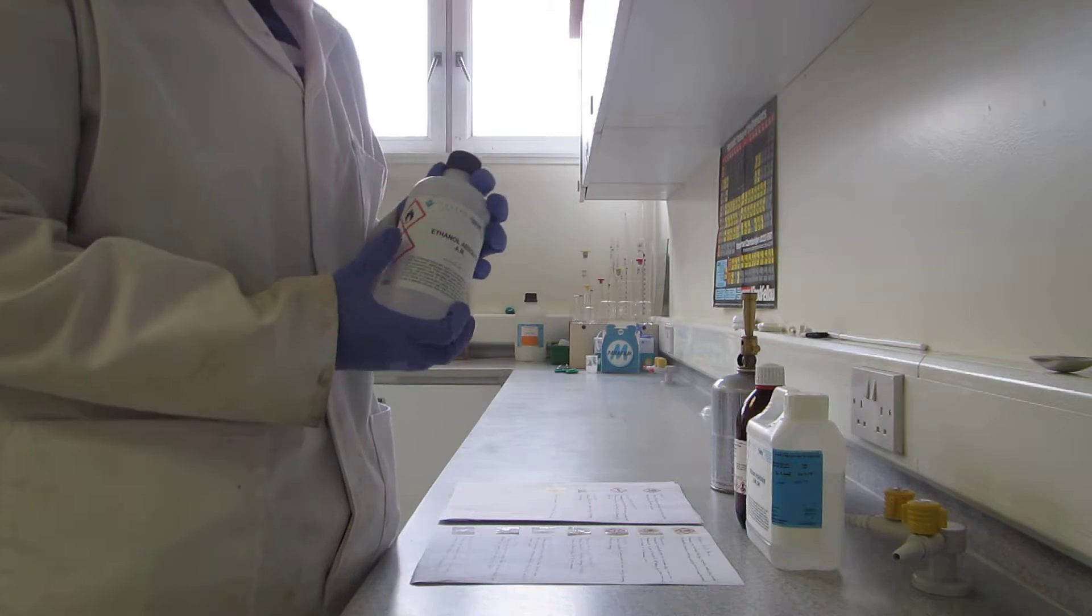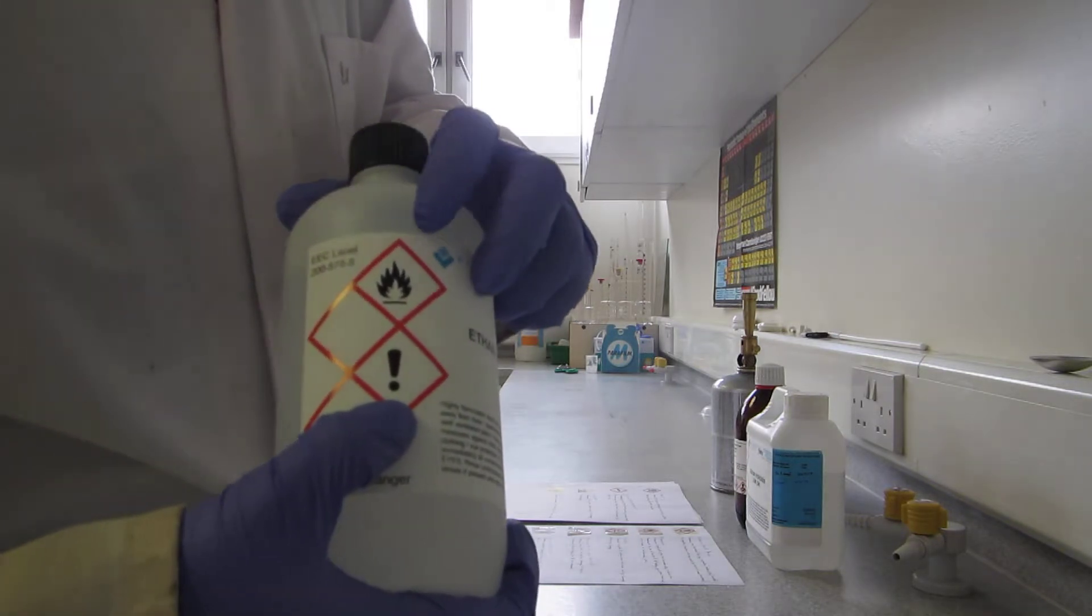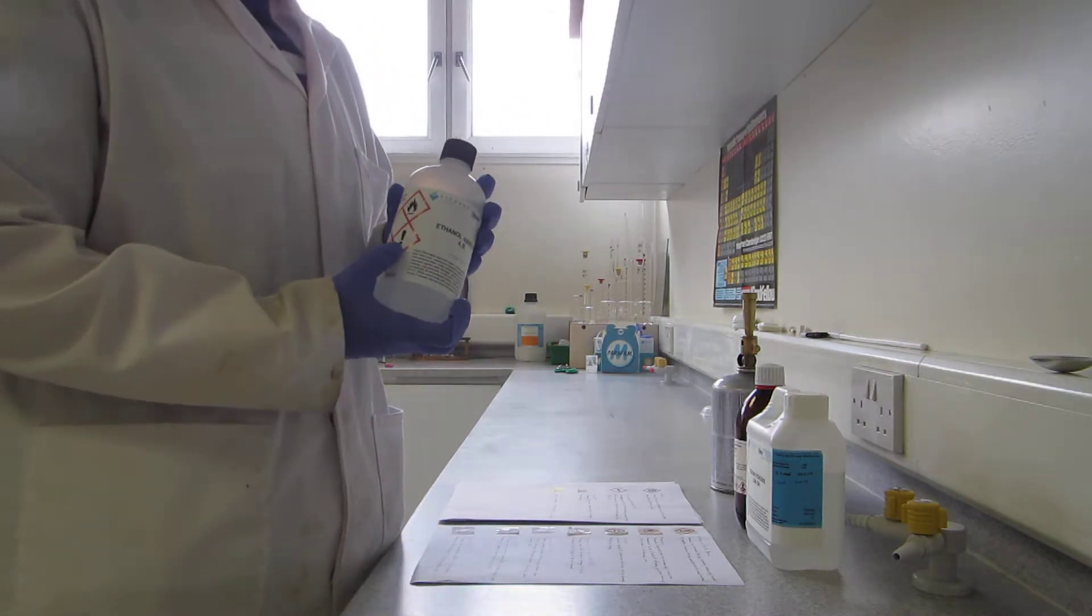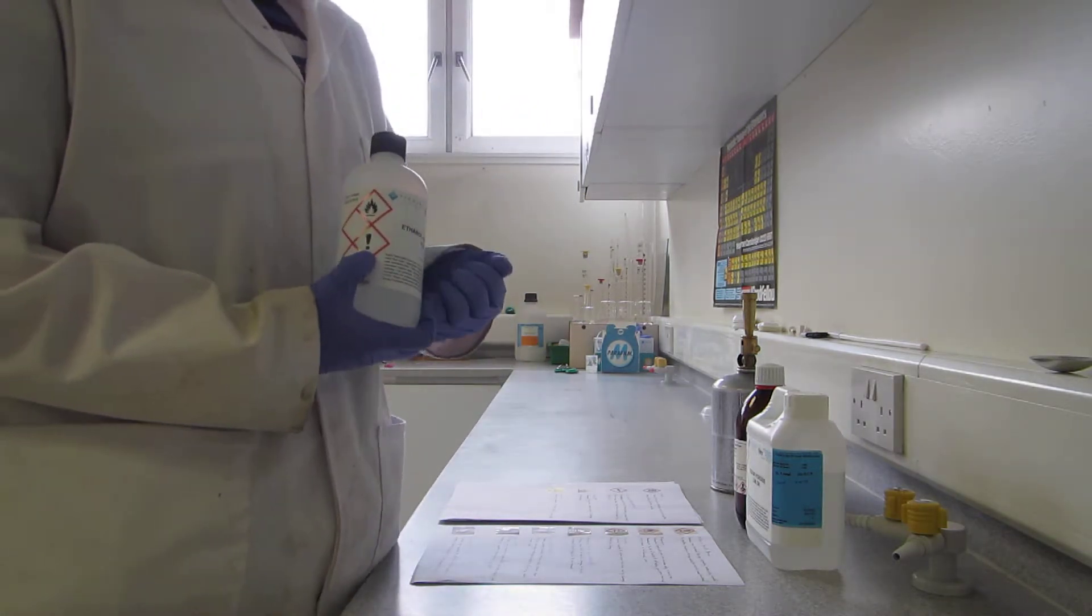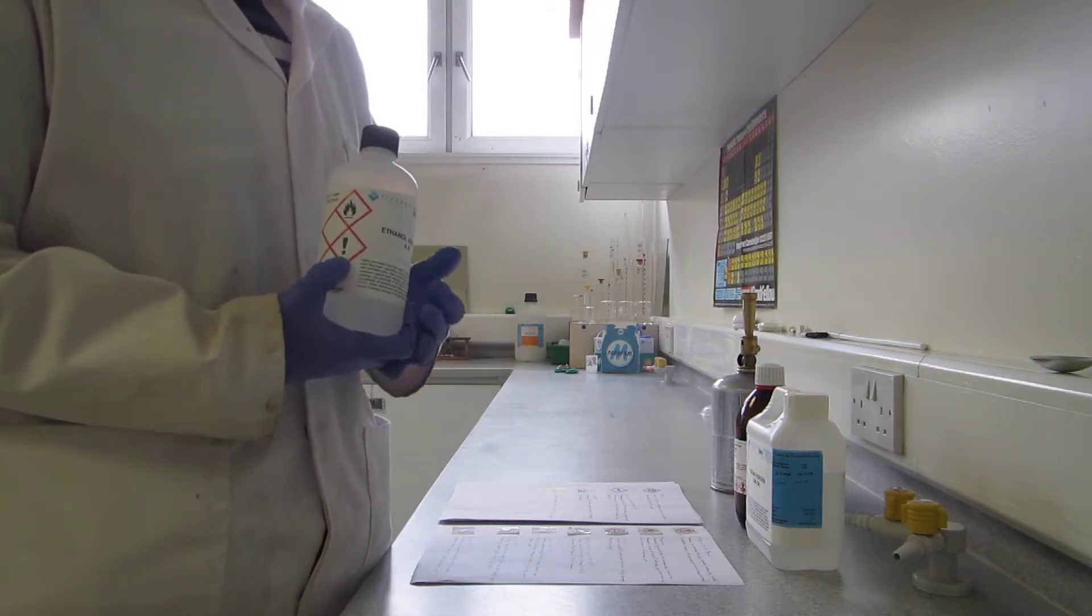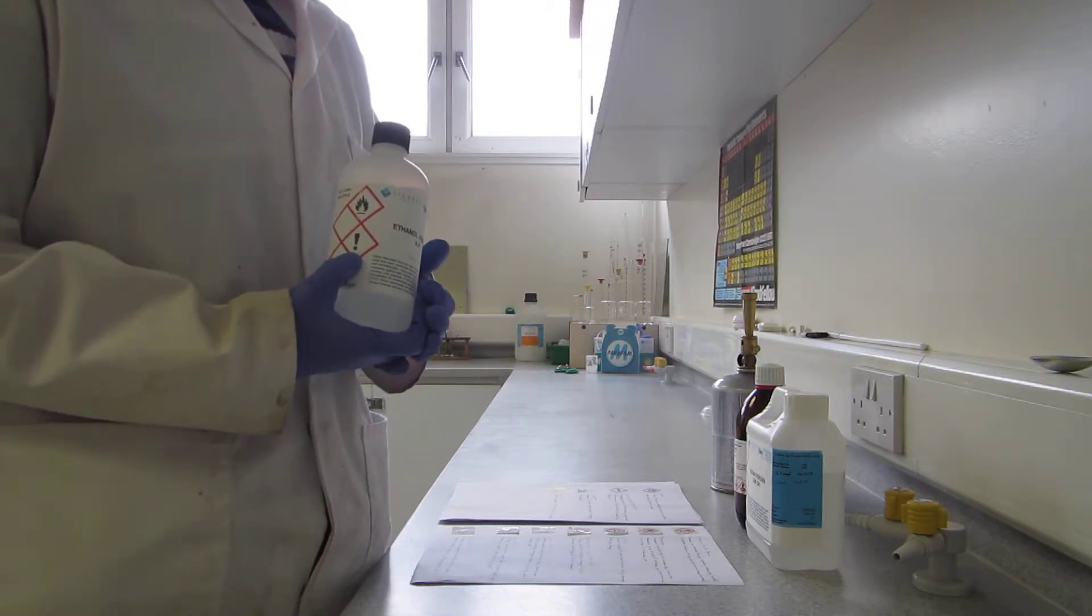The next symbol is this exclamation mark, which means that it's a moderate health hazard. This can be on a chemical because it is an irritant, either to the skin, the eye, or the respiratory system, or it may be harmful if you ingest it, inhale it, or it comes into contact with your skin or eyes.